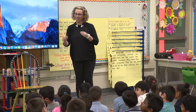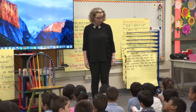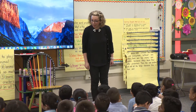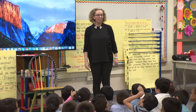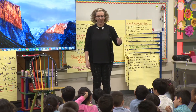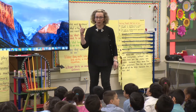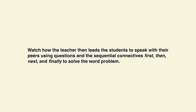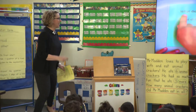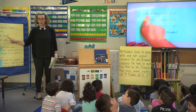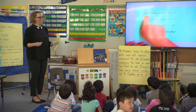We said that we would have a conversation to explain our mathematical thinking. It is called a mathematical explanation. One friend will ask the question and the other friend will explain. Now I'm going to have you ask the questions first. Watch how the teacher then leads the students to speak with their peers using questions and the sequential connectives first, then, next, and finally to solve the word problem. Are you ready to have a conversation? Yes!